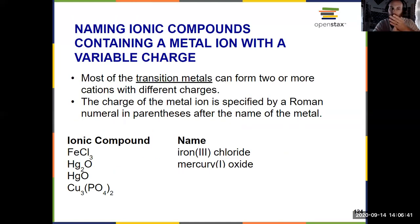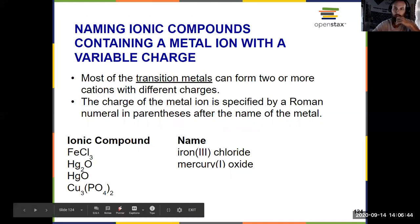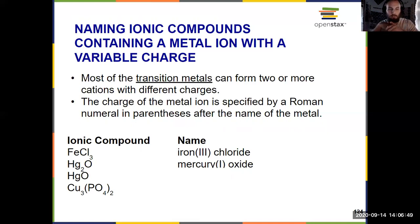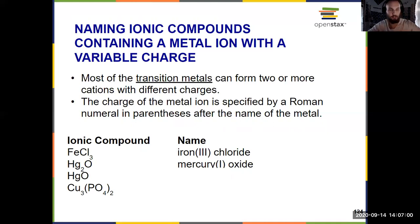Now, if we have a transition metal, it gets a little bit trickier. You may recall from a previous video that transition metals can have multiple charges. The transition metal will always be the cation — you'll never have transition metals that are negatively charged — so the transition metal is always going to come first.